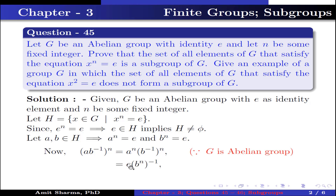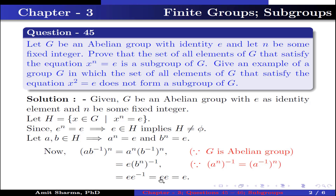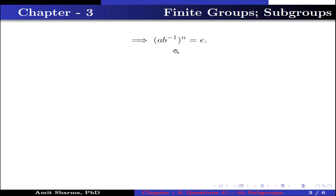This is further written as identity times (b to the power n) inverse, because a to the power n is identity and (b to the power n) inverse equals b inverse to the power n. This is further written as E times E inverse, which equals E times E, because identity inverse is identity, and identity multiplied by identity is identity. This implies (ab⁻¹) to the power n equals identity.